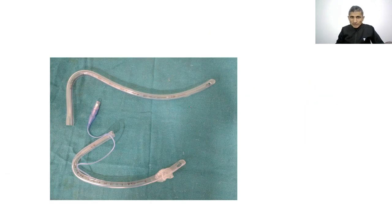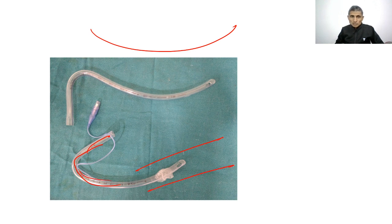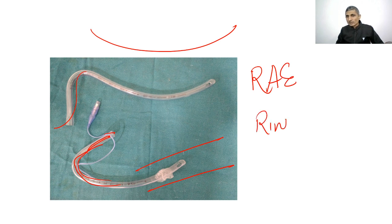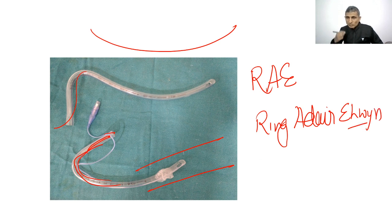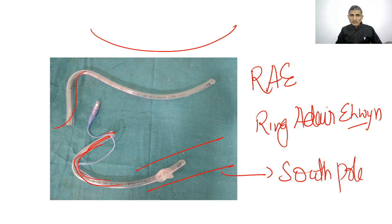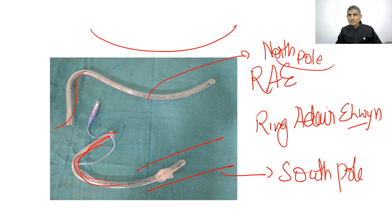Pre-formed RAE tubes are endotracheal tubes that are already curved. One type curves downward (south-facing — south pole RAE) and another curves upward (north-facing — north pole RAE). RAE stands for Ring-Adair-Elwyn, named after the scientists who developed them.